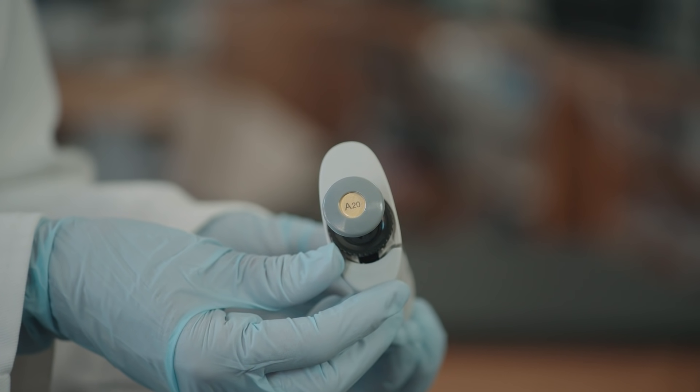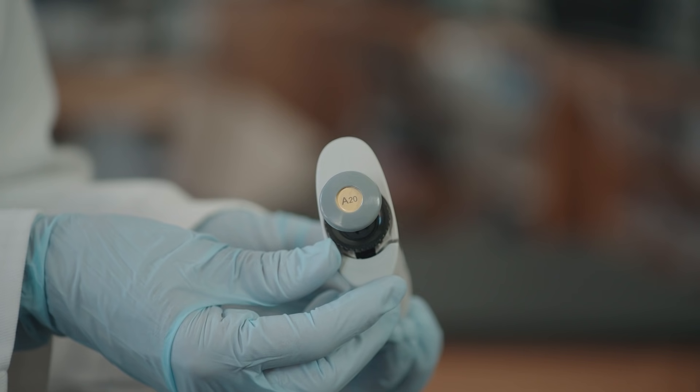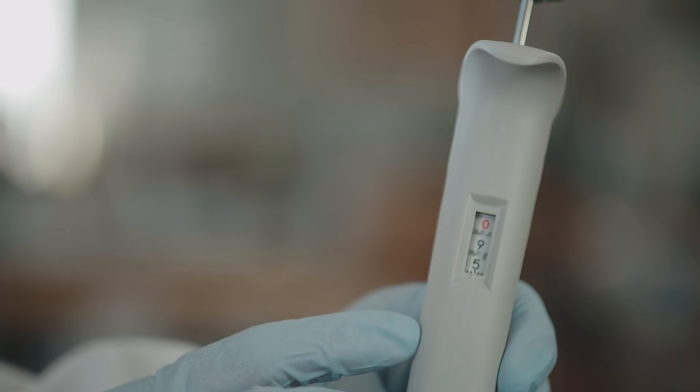This is a P20. It is used to measure volumes from 2 microliters to 20 microliters. This window on the pipette shows the volume of fluid that the pipette is set to take up.